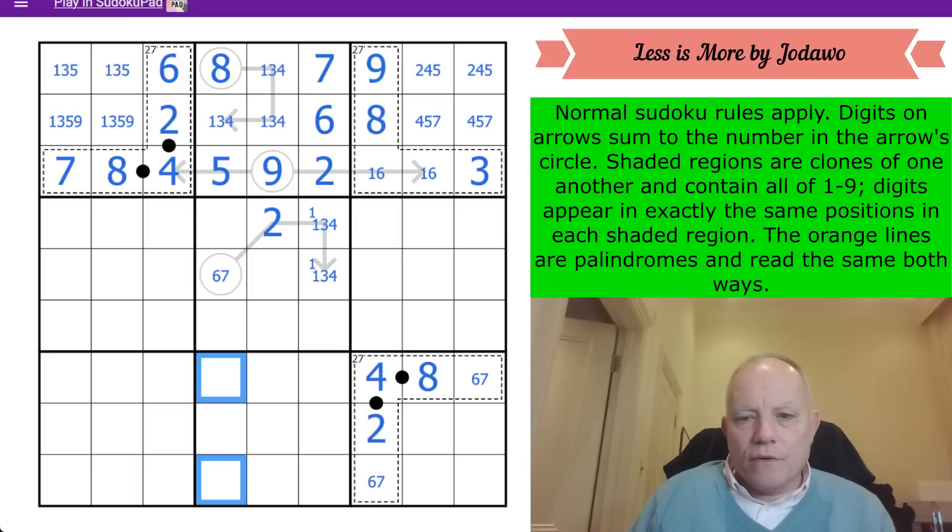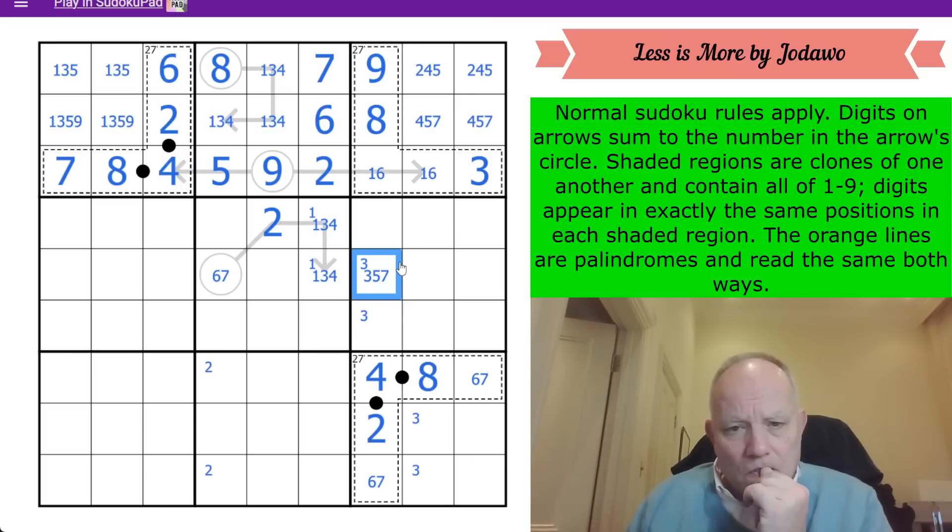There's going to be a 2 in one of those. What can I do with the knight's move rule? 3 is in one of those cells in box 9, and one of those two in box 6. Not there because of the knight's move. This can't be either of those. They both see that - 1 by Sudoku and 1 by the knight's move. So it's 5 or 7 or 3, actually.